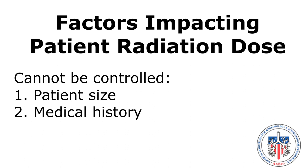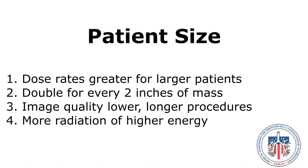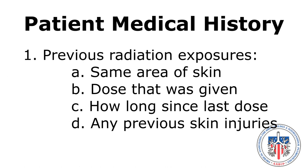Factors impacting patient radiation dose can be divided into those that can be controlled by the operator and those that cannot. Those that cannot be controlled are patient size and medical history. For larger patients, the dose rates are greater — the dose will double for every two inches of body mass. Image quality is typically lower, procedures are longer, and more radiation of a higher energy may be given.